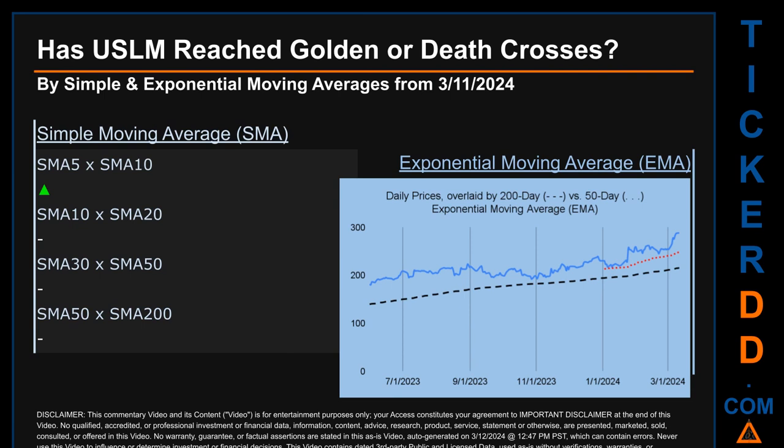Has USLM price reached golden or death crosses? Golden cross and death cross are basic signals that compare average prices across two specified trade day ranges — a short-term versus a long-term range, for example five-day versus 10 trade days. A golden cross is a bullish signal that appears when a ticker's short-term moving average crosses above its long-term average.